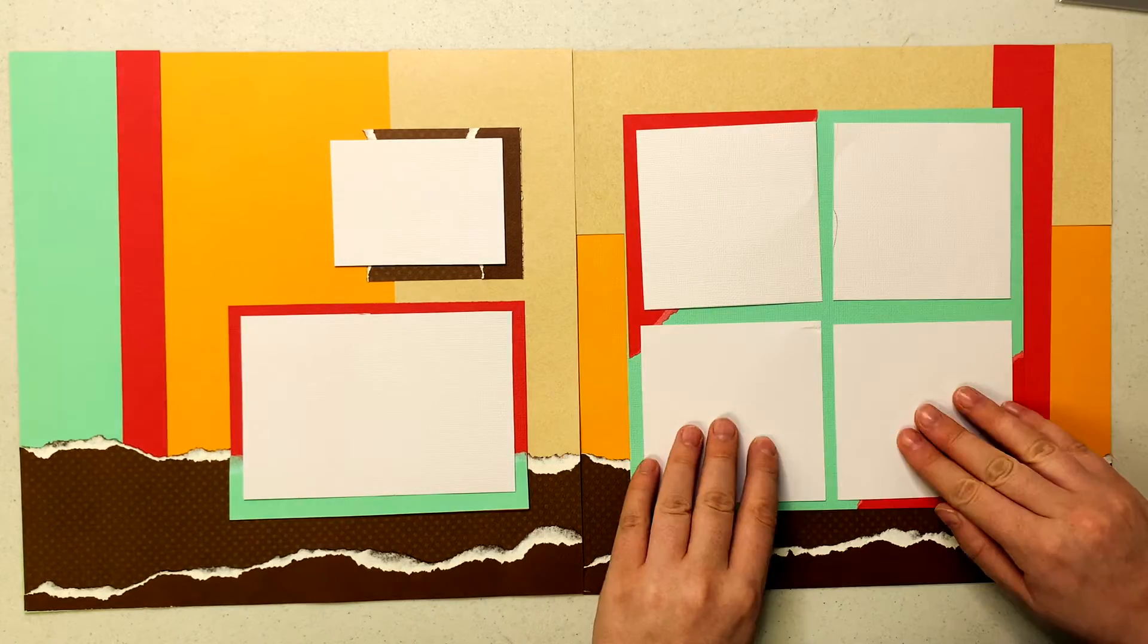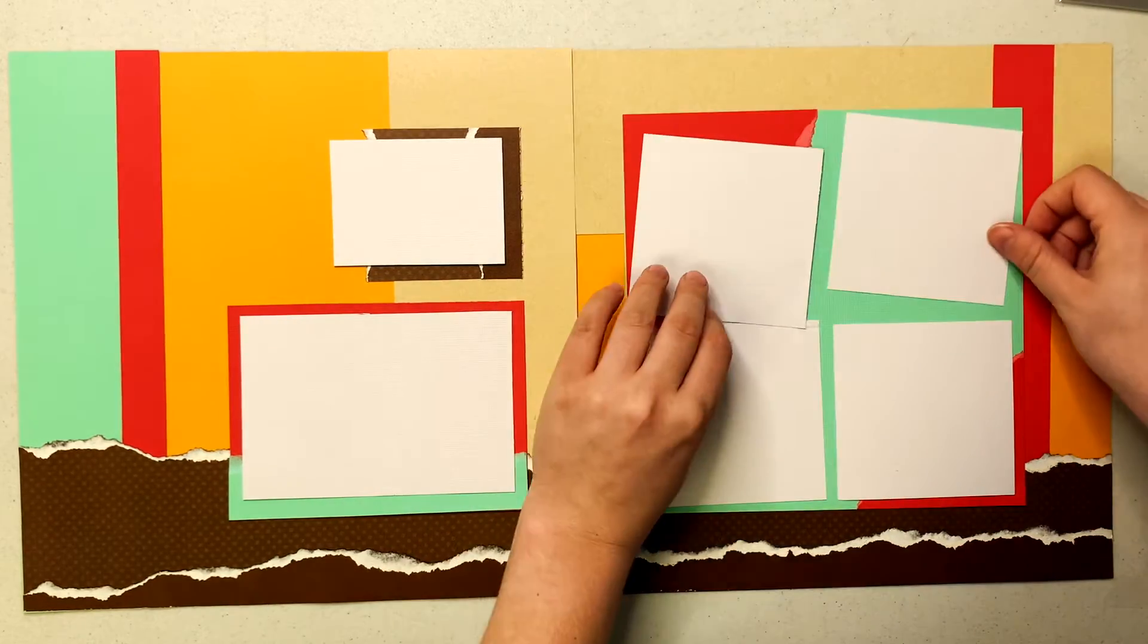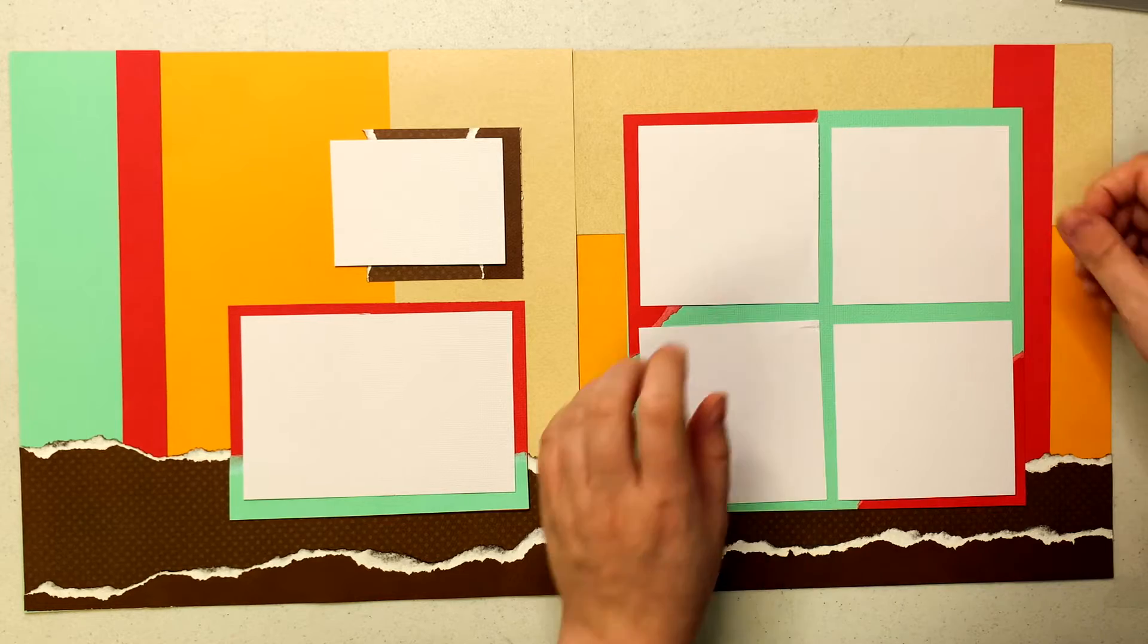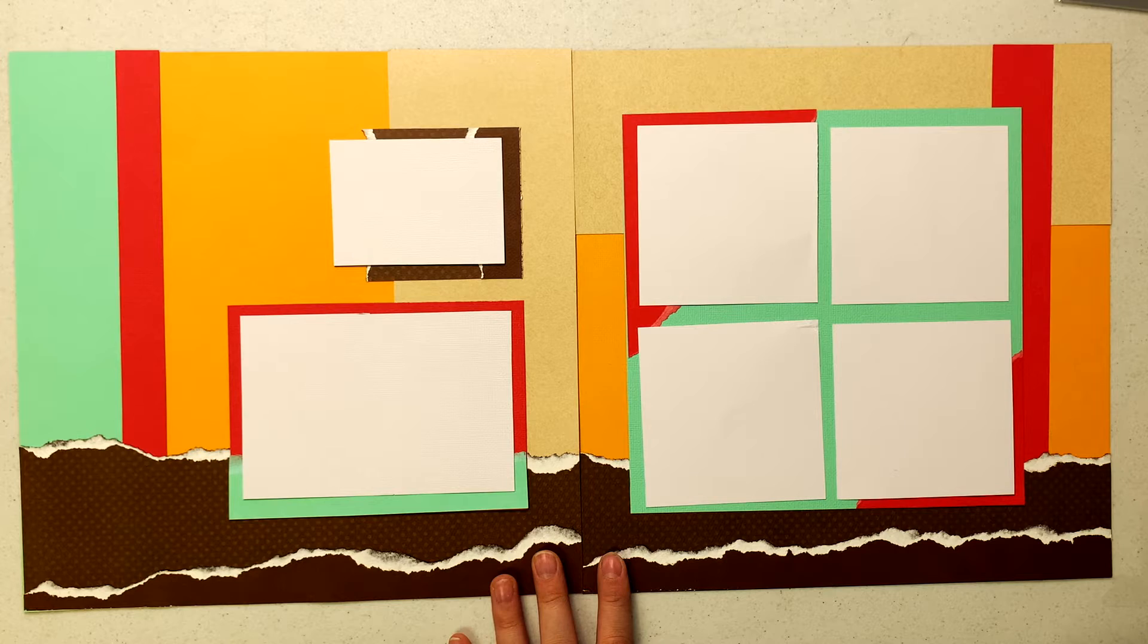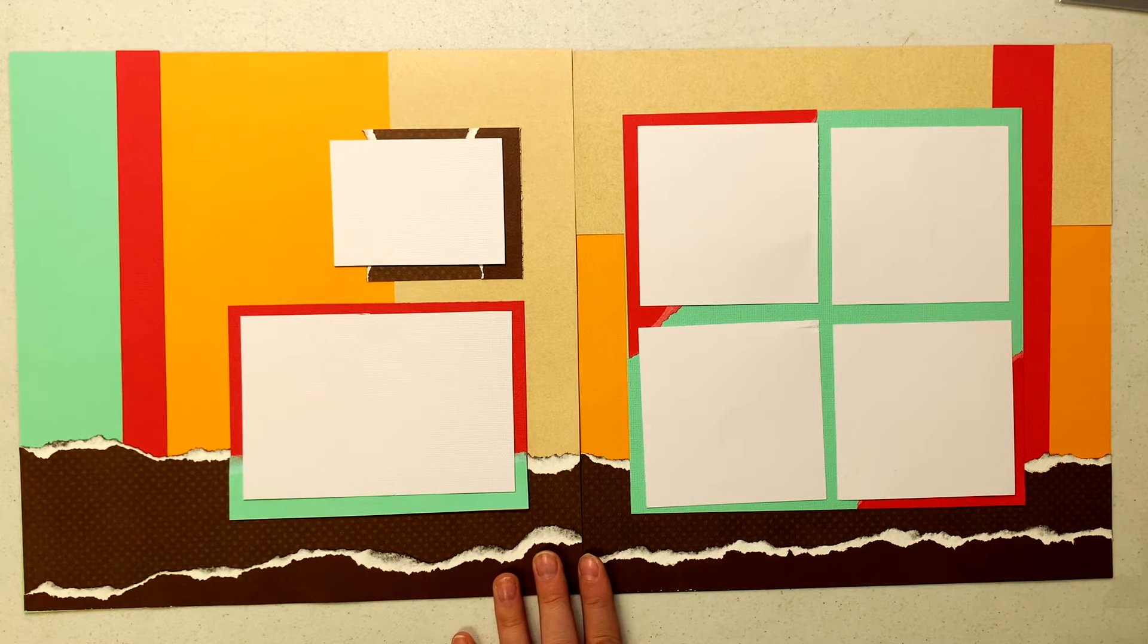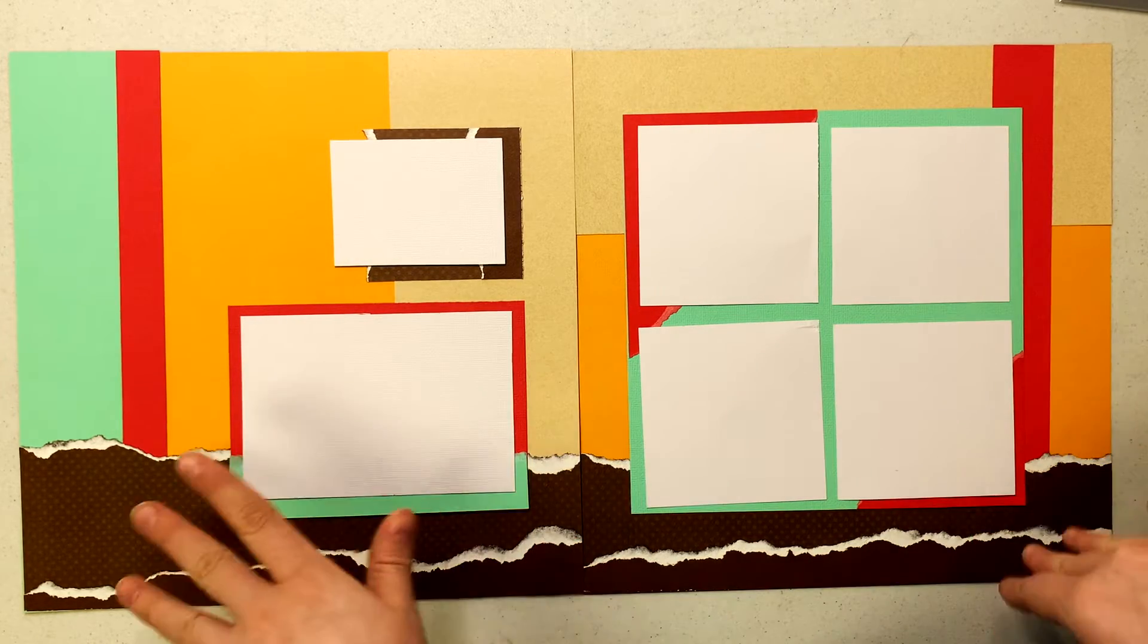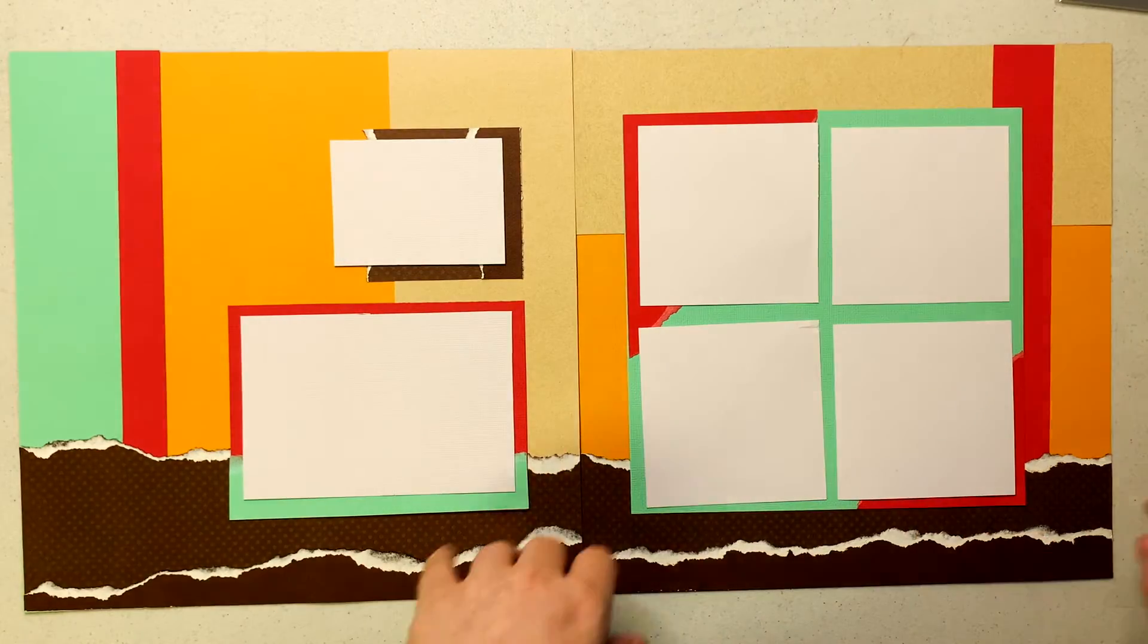You can kind of see here how the ripping really shows through in a really subtle way behind these mats. It's not as obvious as maybe down here and I think it ends up creating some really cool effects. So I'm going to go ahead and adhesive all my photos down and then I will bring in my page pieces.